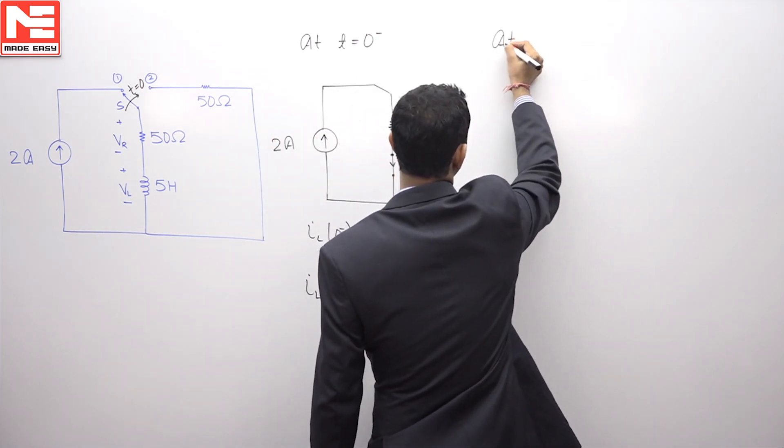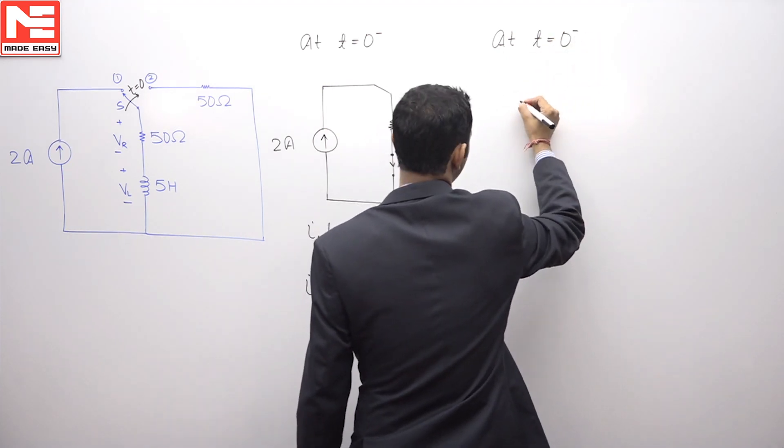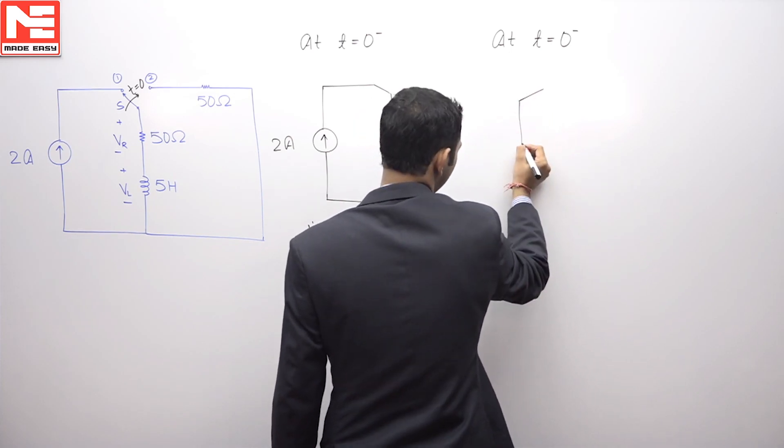As he has asked us to do the calculation at t equals 0 positive, so let us draw the circuit at t equals 0 positive. At t equals 0 positive, the switch is now at position 2.